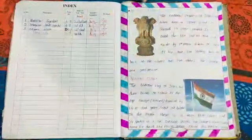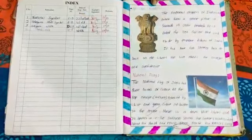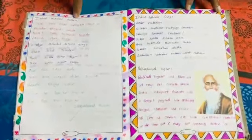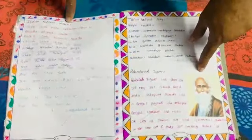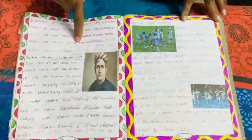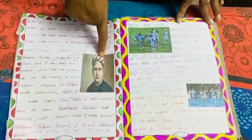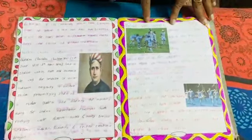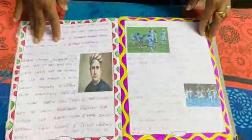So children, before teaching you anything else, I would like you to first know your national symbols — the national emblem, national flag, Indian national anthem and who wrote it, the national song and its author, and your national sport. All of this you will be covering.